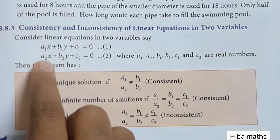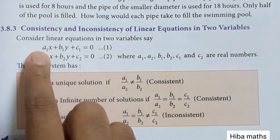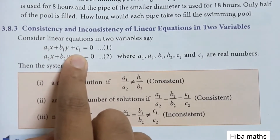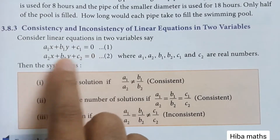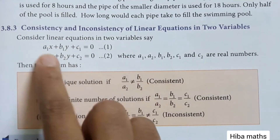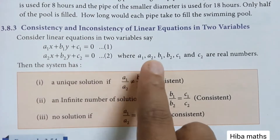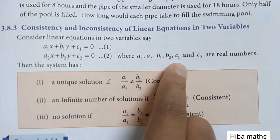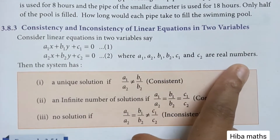We can solve two linear equations. Let X coefficient be A, Y coefficient be B, and constant be C. The first equation is labeled 1 and the second equation is labeled 2. So in these equations we have A1, A2, B1, B2, C1, C2 — all real numbers.